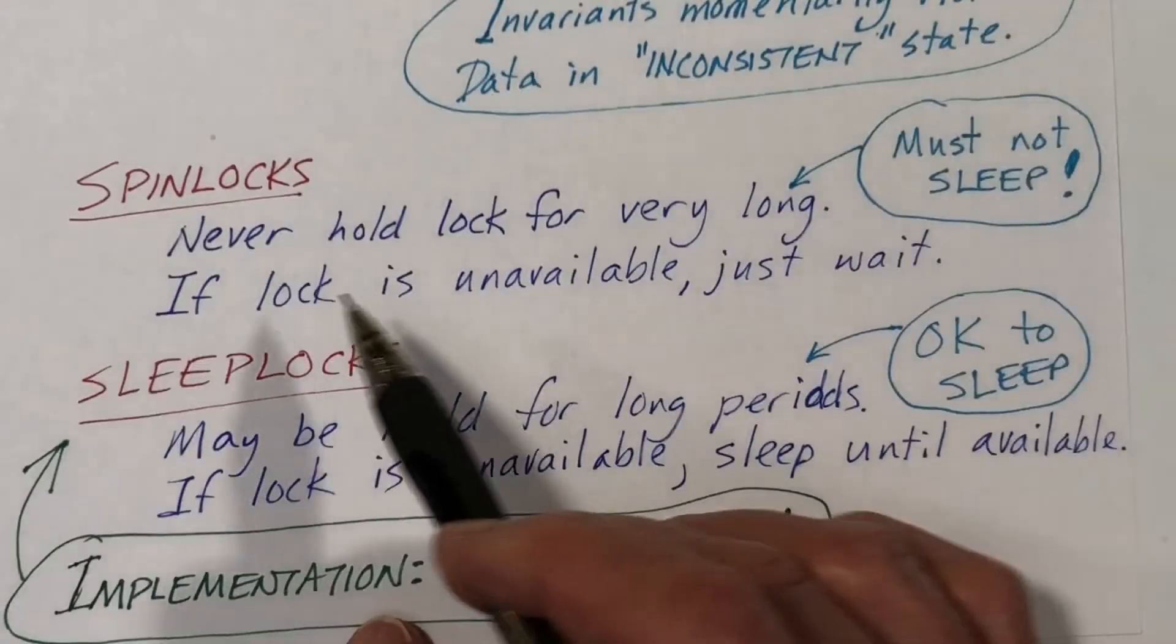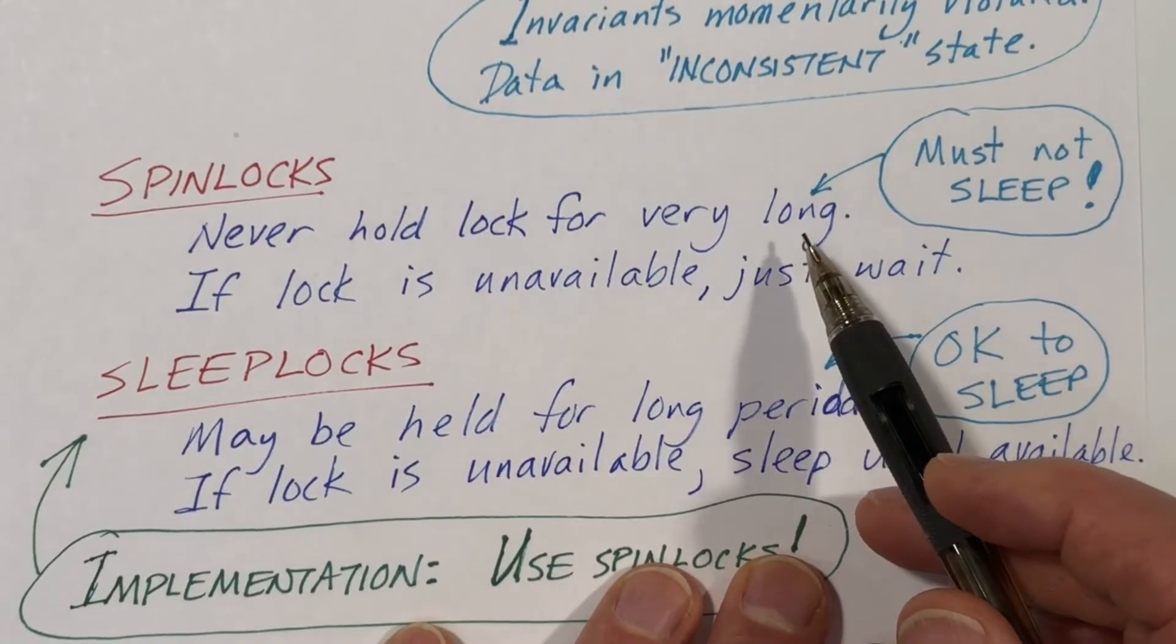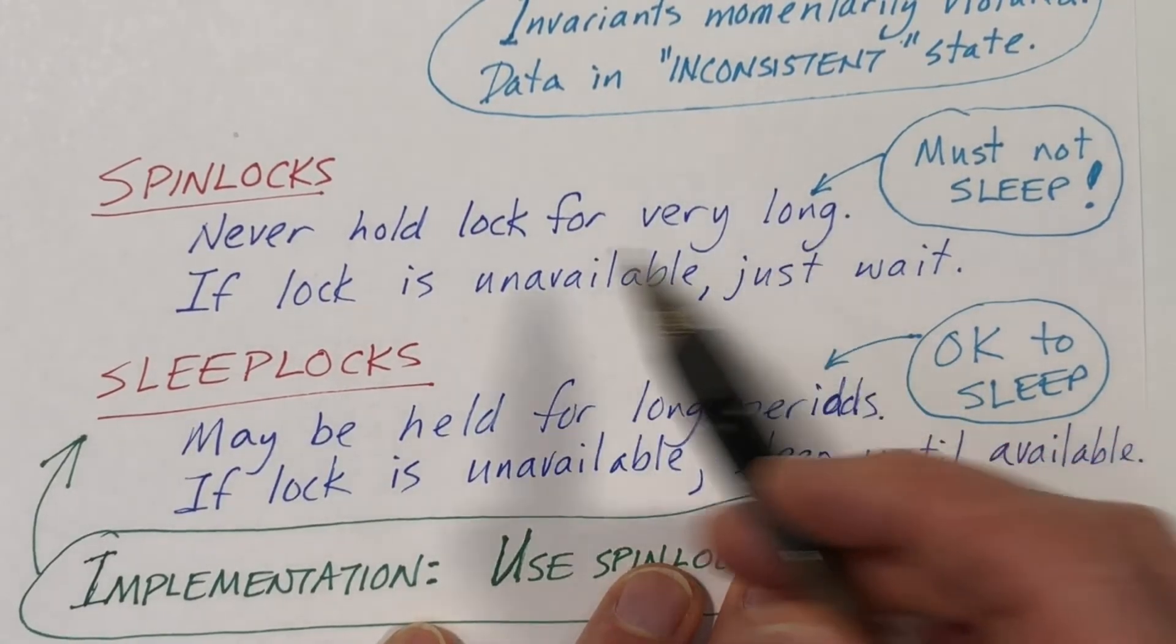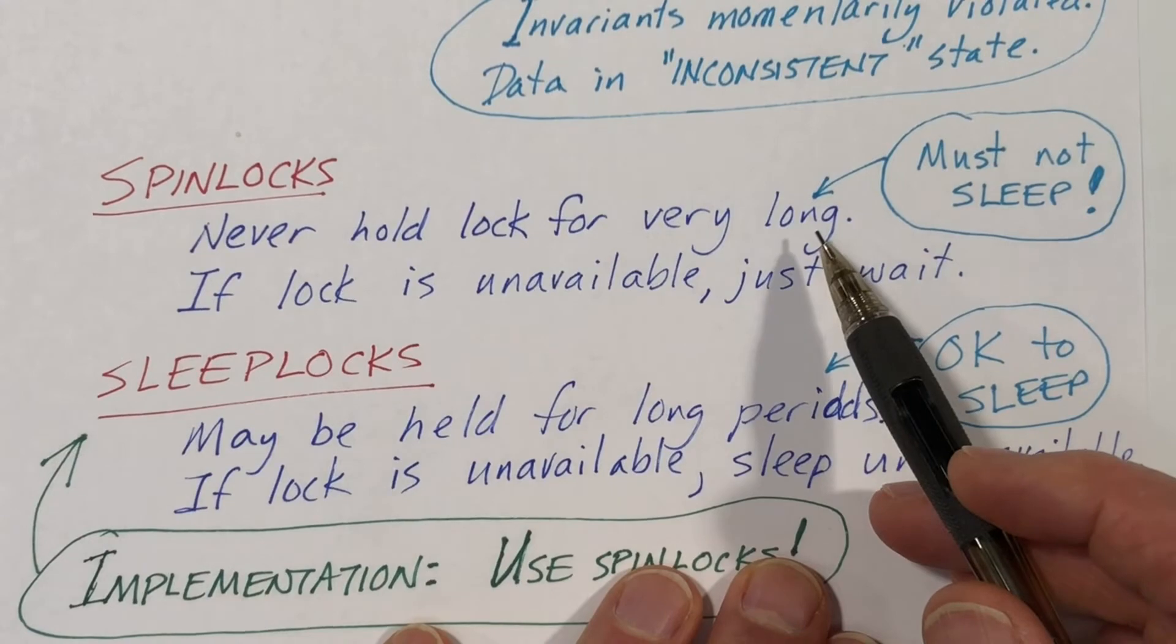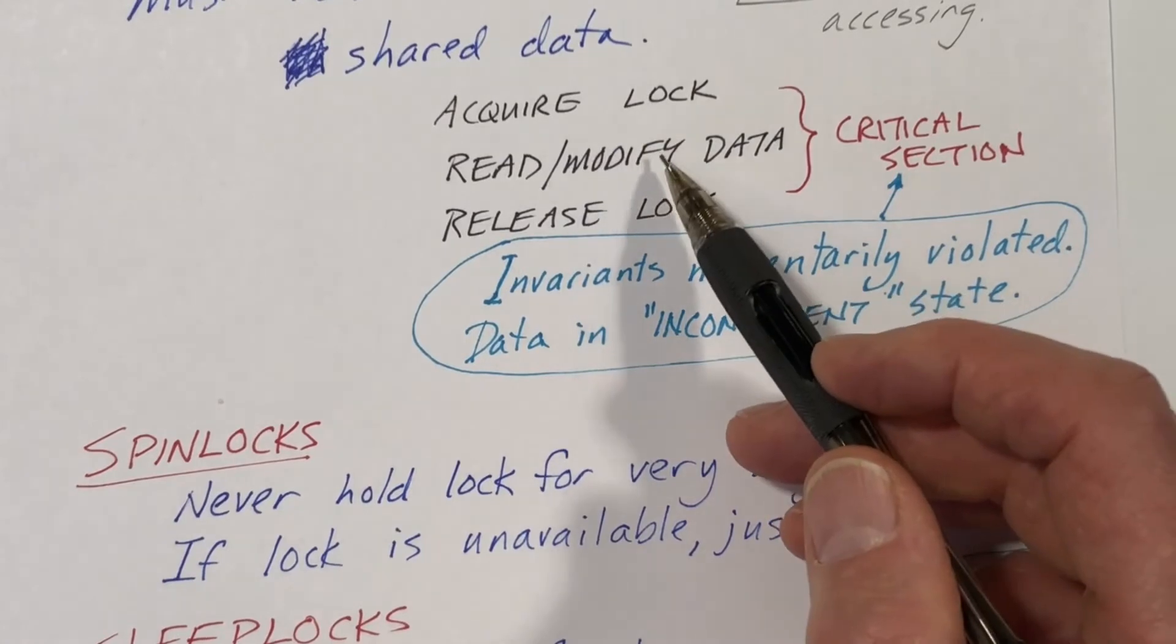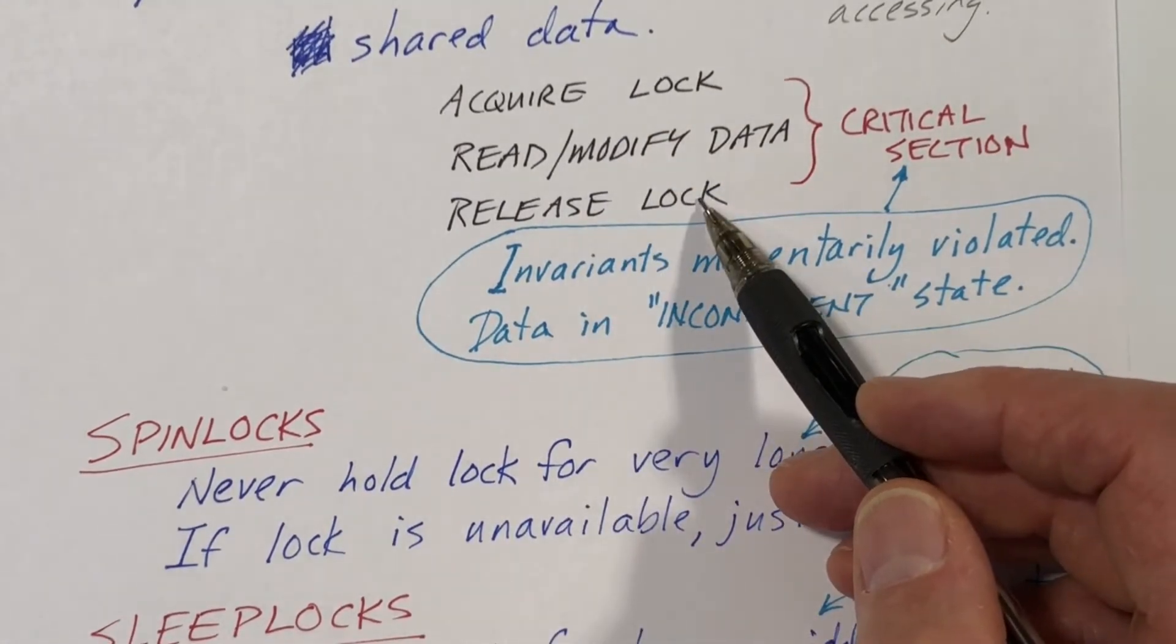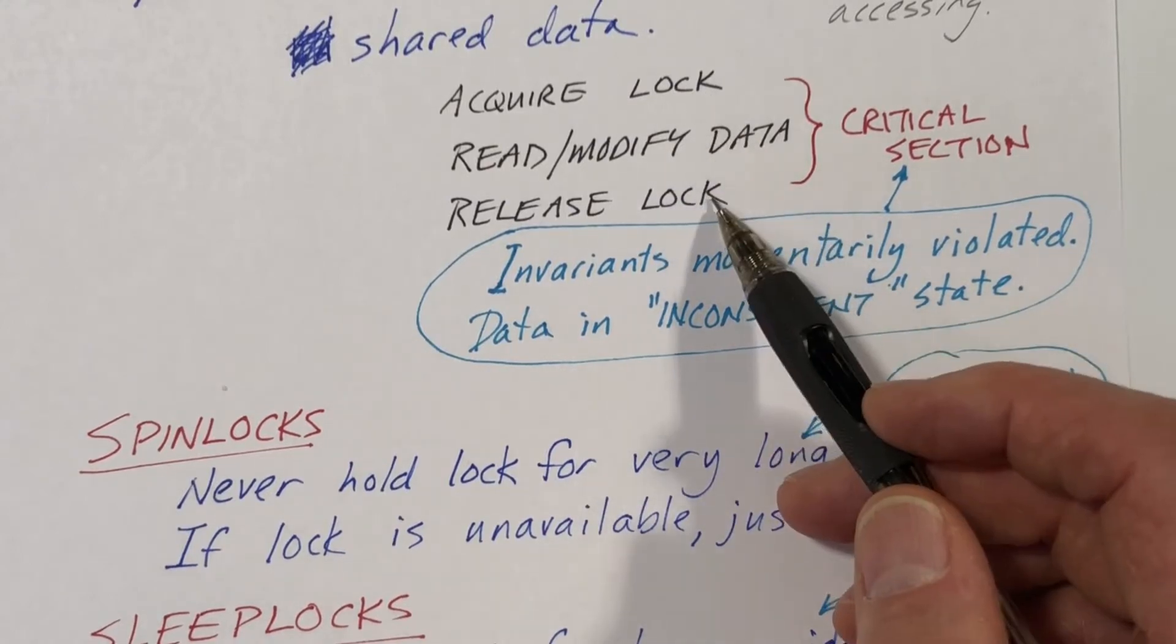So with a spin lock, we must not hold the lock for very long. That's the key requirement. And in particular, while we are in the critical section, the code must not sleep. We grab the lock, we acquire the lock, quickly access the data, and then fairly soon thereafter release the lock. No time slicing and no sleeping.